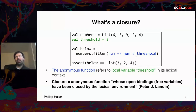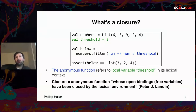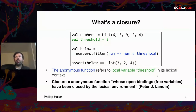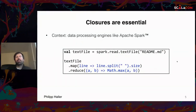An open binding is what we'd now call a free variable. Threshold is such a free variable because it's not defined within the anonymous function but somewhere outside. A closure closes that variable by essentially copying what's in the lexical environment into the closure's environment, so that when we execute the closure we can access that threshold value. This definition is attributed to the late Peter Landin.